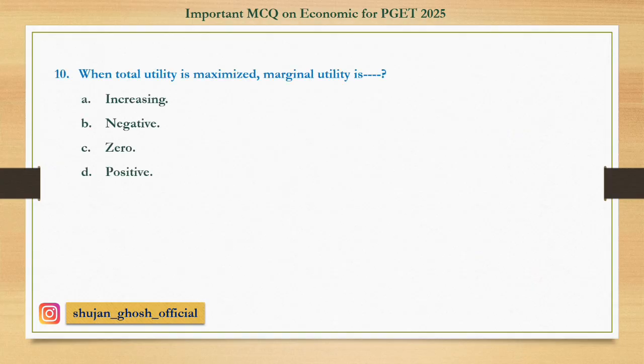Question number ten: When total utility is maximized, marginal utility is — option A: increasing; B: (skipped); C: zero; D: positive. Answer: zero.